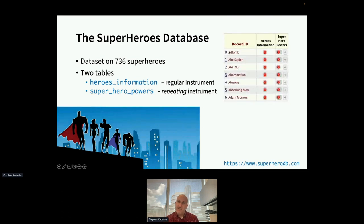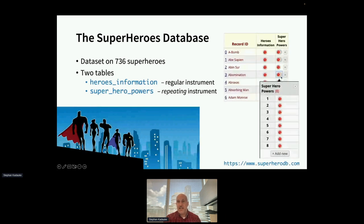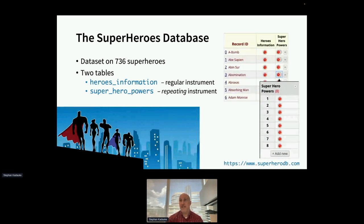Here's what this looks like in REDCap. You have the first six records from the superheroes database. The first record is ABOM. We have the heroes_information instrument, with one circle showing exactly one instrument filled out with information about that record. Then superhero_powers has multiple of these — you can add additional ones. Regular instruments versus repeated instruments is something REDCap supports, and it's very useful for medical data — a patient might have demographics and then multiple medications requiring forms filled in repeatedly within a single record.